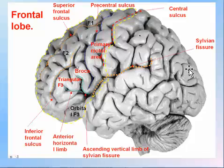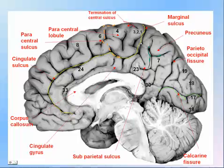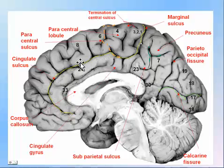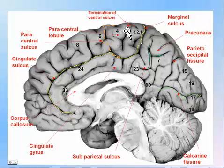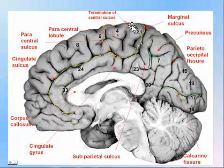The cingulate sulcus and cingulate gyrus are visible at the medial portion of the frontal lobes. The central sulcus and the paracentral sulcus are identified — the central sulcus terminates here and does not continue further, while the paracentral sulcus is its continuation.